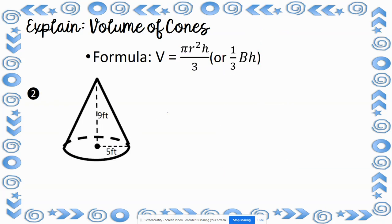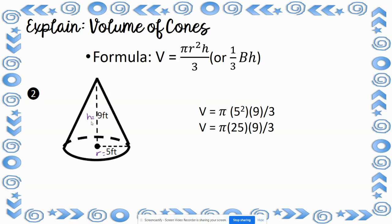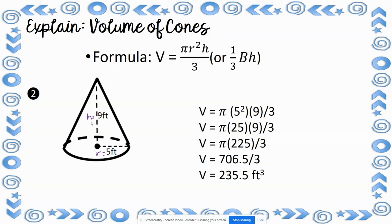For number 2, the cone has a radius of 5 feet and a height of 9 feet. Plugging into the formula: pi times 5 squared times 9, divided by 3. 5 squared is 25; 25 times 9 is 225; 225 times pi is 706.5. Dividing by 3 gives 235.5 cubic feet.